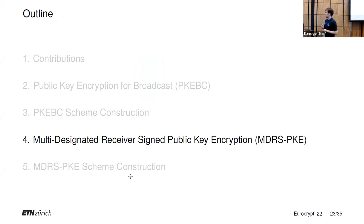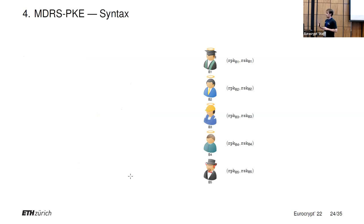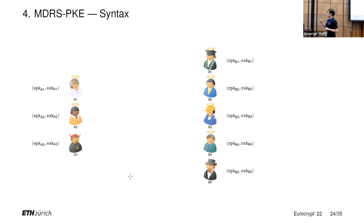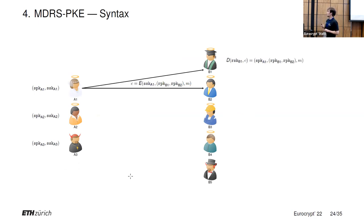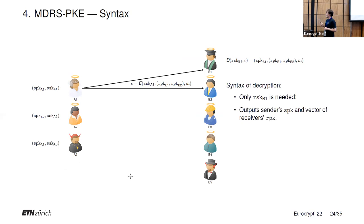Now let's look at the syntax and security notions for MDRS-PKE schemes. The syntax is somewhat similar to PKE-BC schemes, except that now senders also have key pairs. A sender also has to use their own secret key in order to generate a ciphertext. Decryption now outputs not only the vector of receiver public keys and the message, but also the sender's public key. And as before, for decryption you really only need the receiver's secret key — you do not need to know who the sender is or who the other receivers are, and this is output by the decryption.